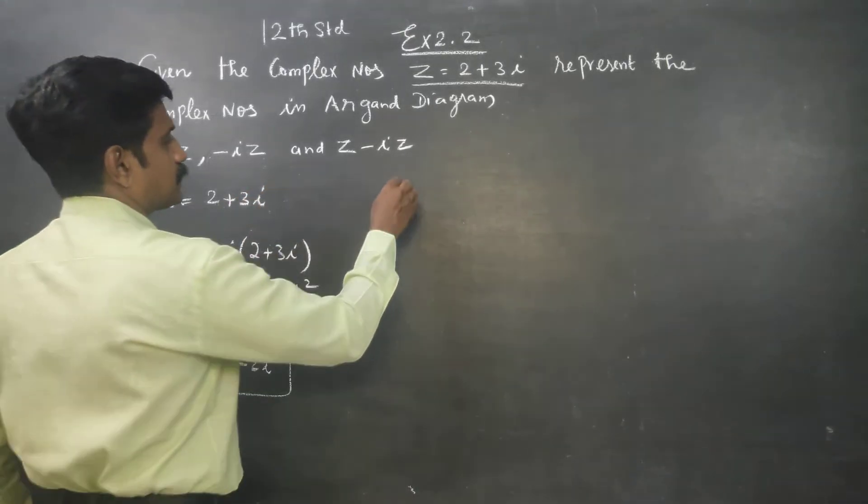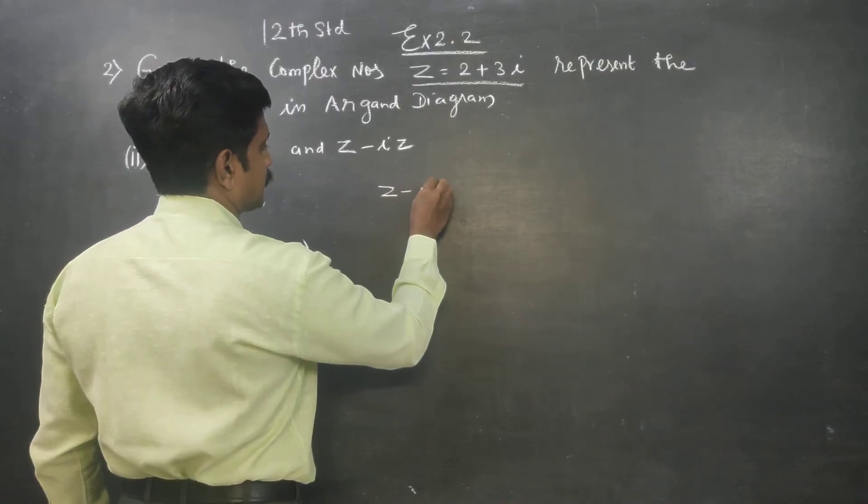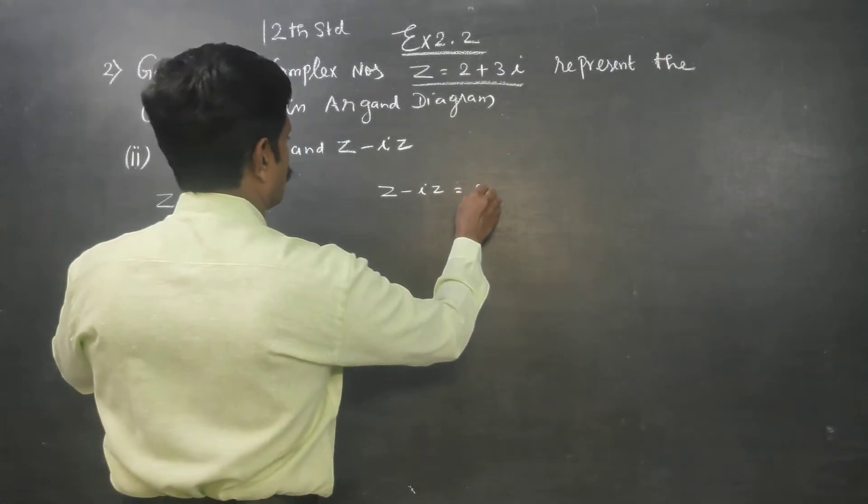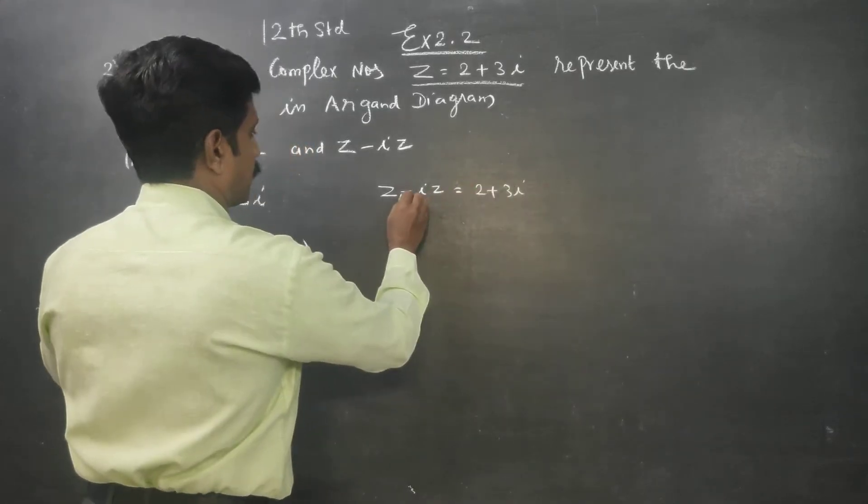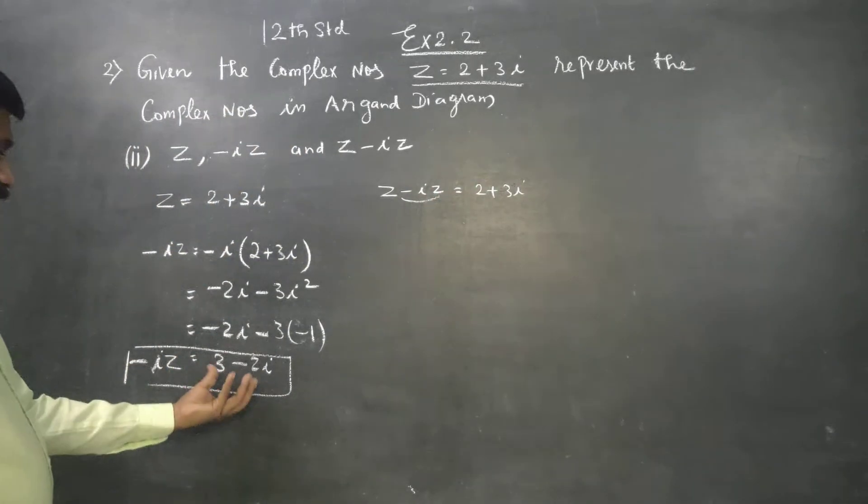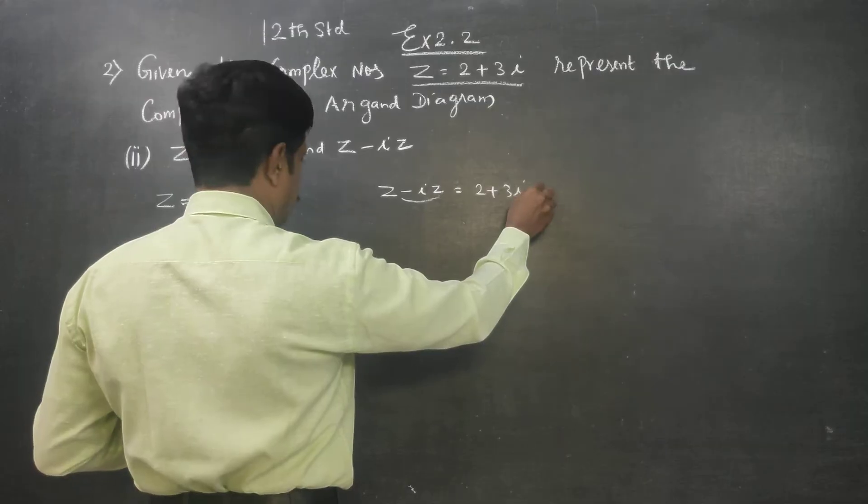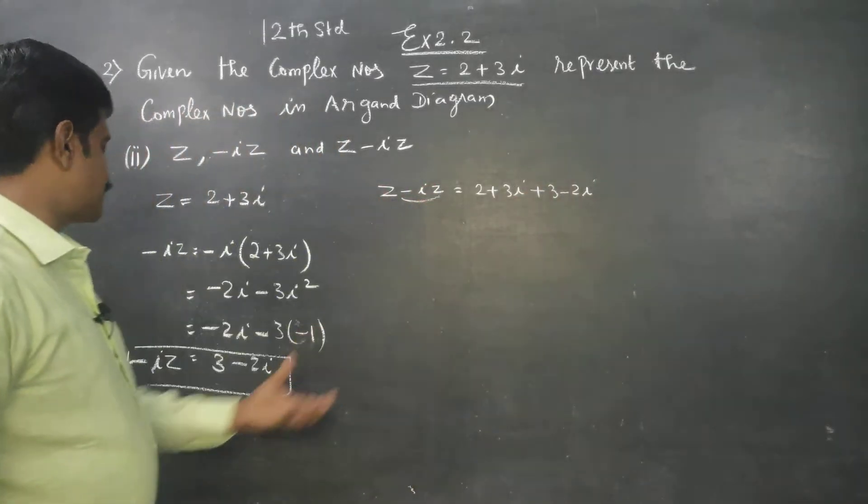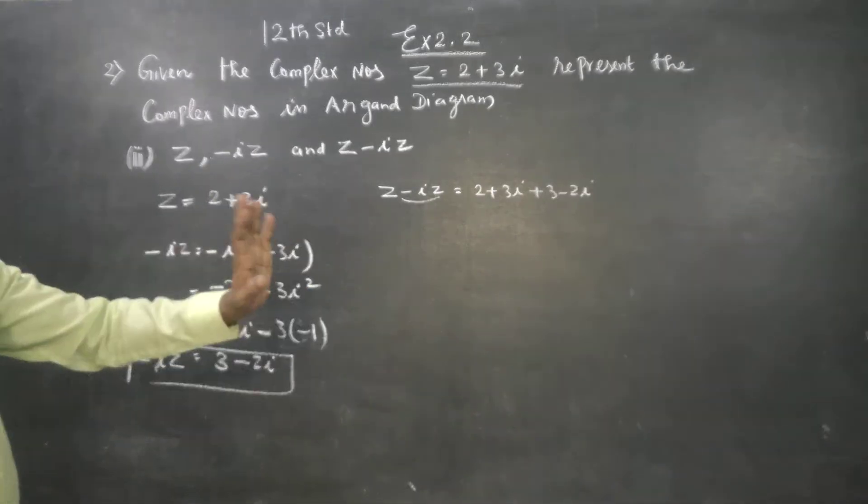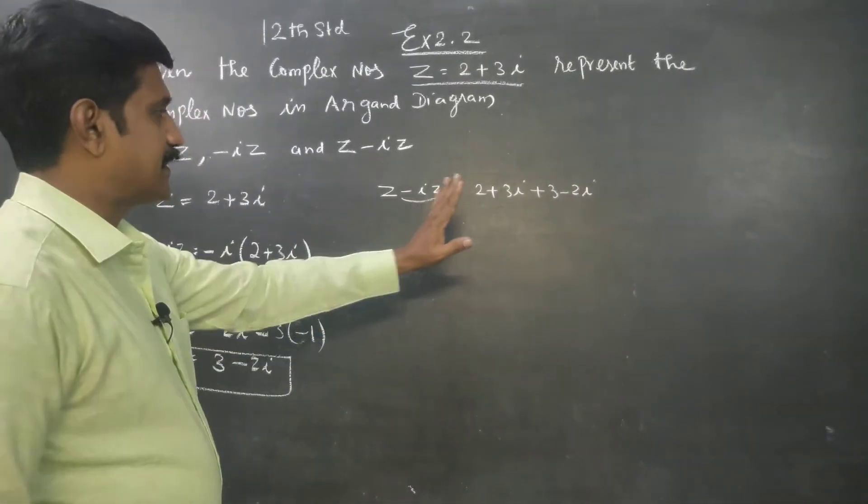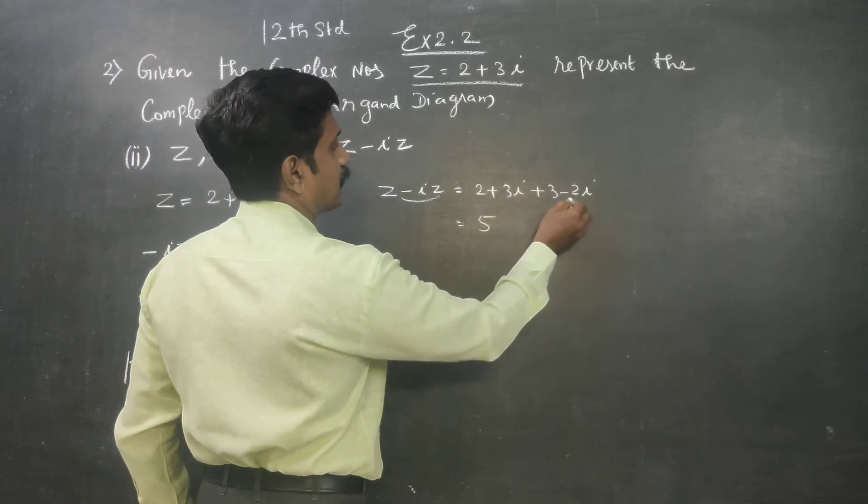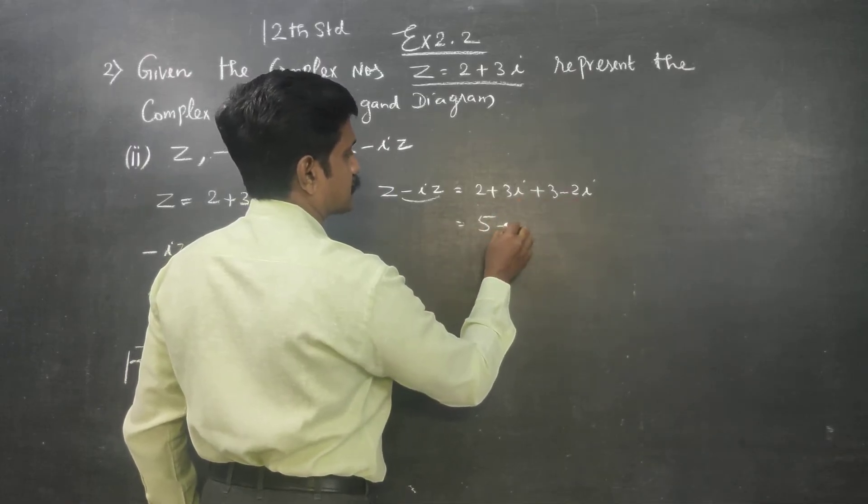Third one is z minus iz. z minus iz, what is my z? z is 2 plus 3i. Minus iz. Then z is 2 plus 3i minus iz. The symbol changes. 2 plus 3 is 5. 3i minus 2i is plus i.